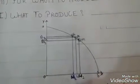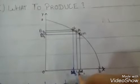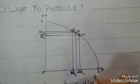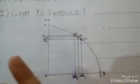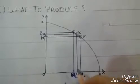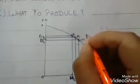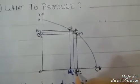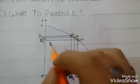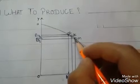Ab isse hum ek diagram se samajhte hai. The basic points are W and B. Wheat ko denote kia hai x-axis par, aur barley ko denote kia hai y-axis par. Starting mein wheat ki production thi W aur barley ki production thi B. Jab production wheat increase hoti hai W se W1 par, toh barley ki production decrease hogi B se B1 par, jise hum M point se denote karte hai.